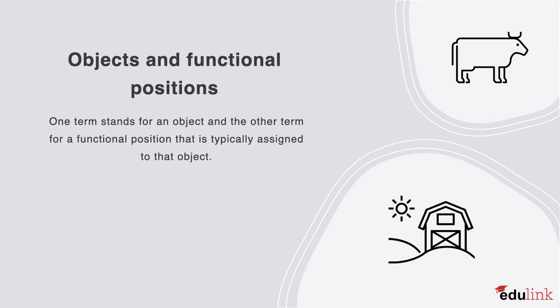The next relation type are objects and functional positions. This is where one term stands for an object, and the other term for a functional position that's typically assigned to that object. So for example, cow and farm. A cow lives on a farm, in which it fulfills functions such as dairy production.